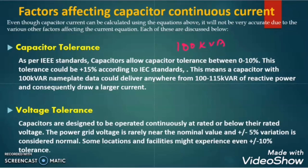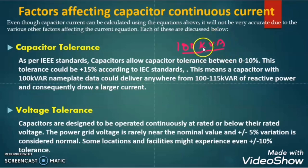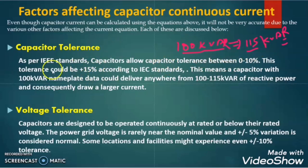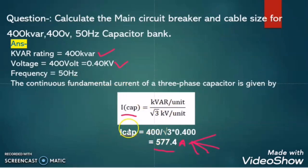Let us explain these one by one. As per the IEEE standard, the capacitor tolerance is between 0 to 10%, and as per the IEEE standard the capacitor tolerance can be up to 15%. Suppose we have a 100 kVAR capacitor — due to its tolerance, this capacitor can behave as a 115 kVAR capacitor. So if I place a capacitor bank rated at 100 kVAR but with 15% tolerance, it will behave like a 115 kVAR capacitor. When this value changes, the capacitor current will also change.